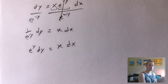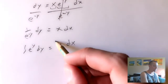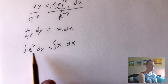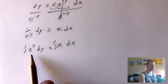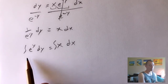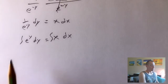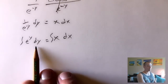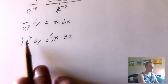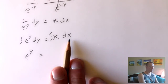Once we've got our y and dy on one side and our x and dx on the other side, all we have to do is integrate both sides. We just put an integral sign at the front. The dy indicates we're integrating with respect to y on the left side, and the dx indicates we're integrating with respect to x on the right side. The integral of e to the y with respect to y is simply e to the y.